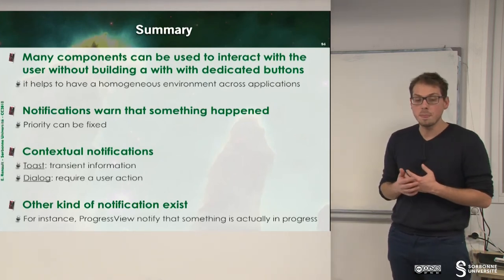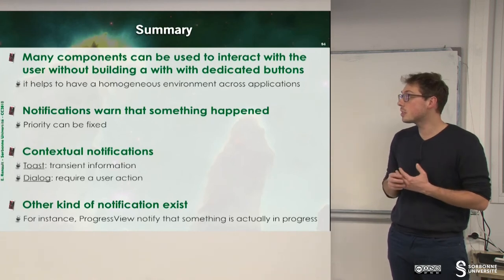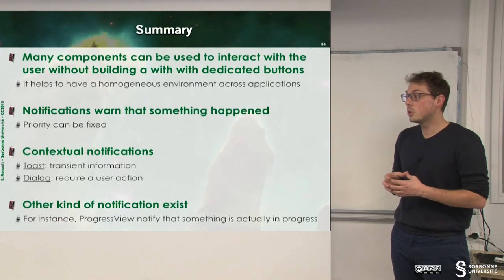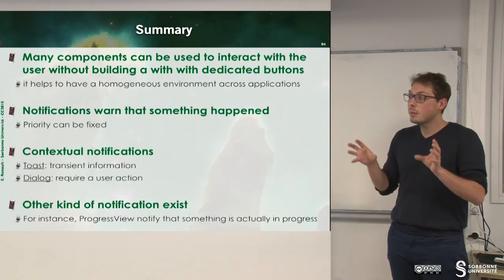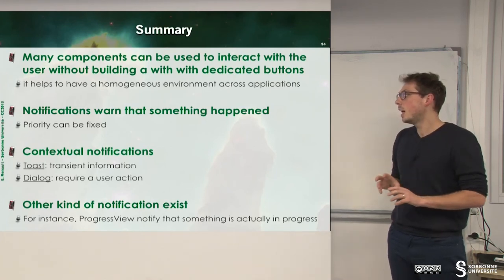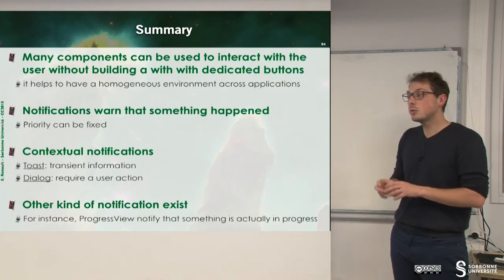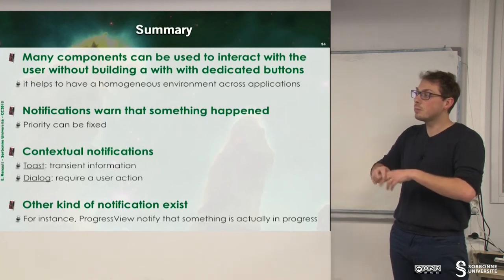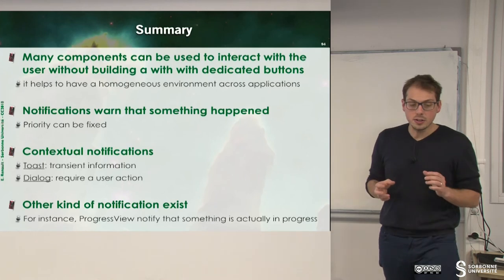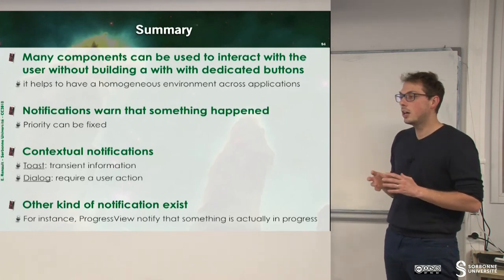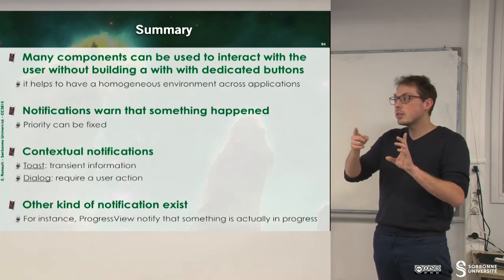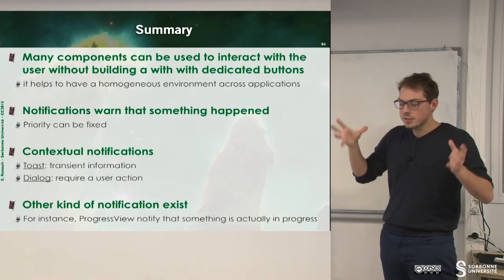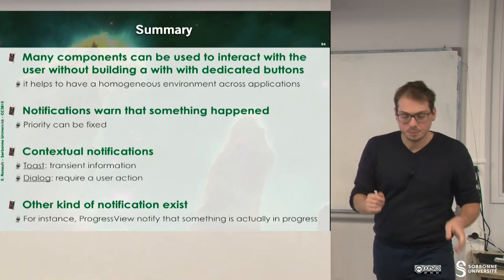To sum up, we have seen a lot of components to notify users that something happened. Using these kinds of components helps to have homogeneous applications and an ecosystem in Android where all applications use the same components to do the same things. You have to choose carefully: if you want to just notify the user, don't use an AlertDialog. If you want one action, use a Snackbar; if you want more actions, use an AlertDialog. There are also other kinds of notifications, such as a progress status bar for something like downloading, but we need to know more things before diving into that.